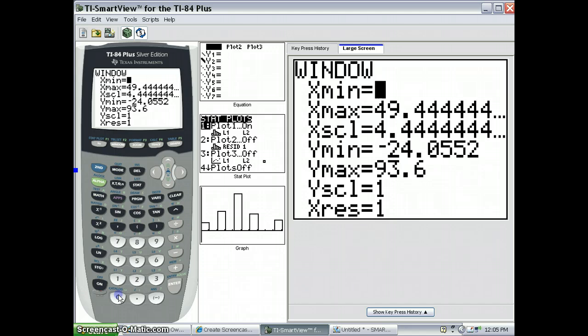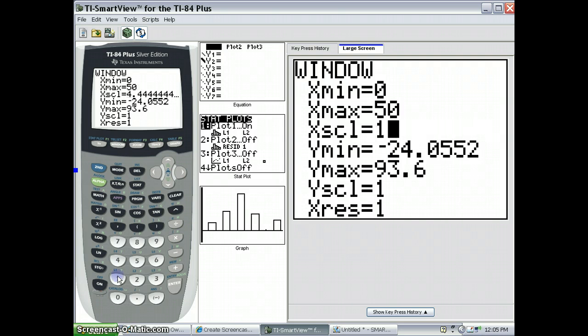We'll change the x minimum to 0. We'll make the x maximum 50. And we'll make the x scale 10, because we want rectangles of base width 10. So let's do that and let's check the graph.